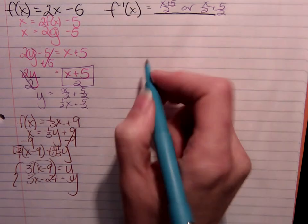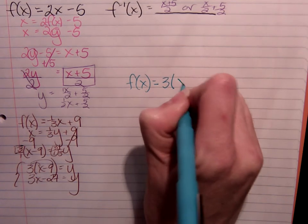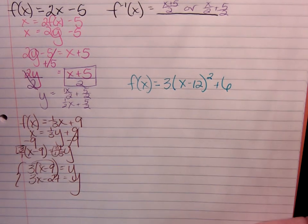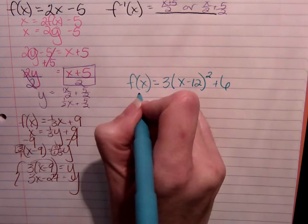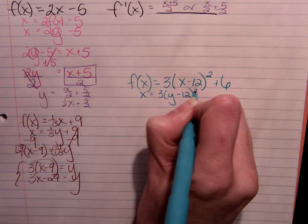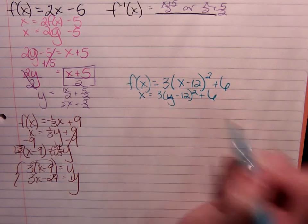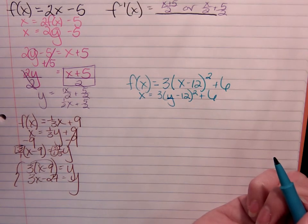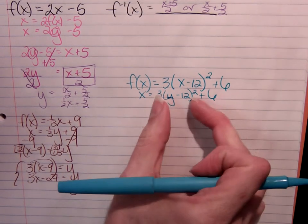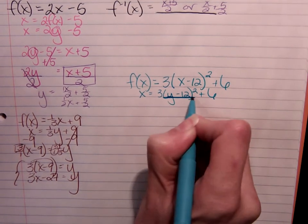What about quadratics? If f of x equals 3 times the quantity x minus 12 squared plus 6. Either way, it's got the same first step, so to speak. I'm going to rewrite this as x equals 3 times y minus 12 quantity squared plus 6. I'm still going to isolate the y value. At this point, though, before we can get at it, I've got to get rid of everything on the outside of these parentheses before I can get there. So we're going to treat this like one object for a little while.